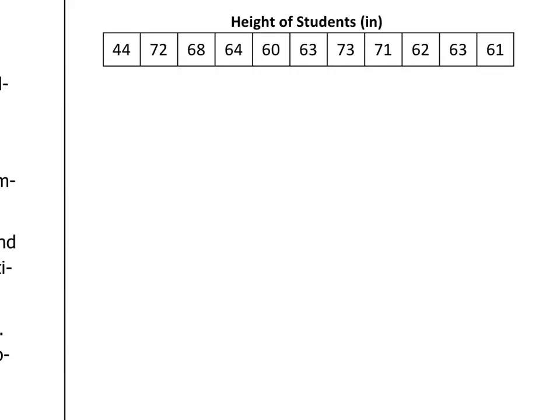The first step in making a box plot is ordering the data from least to greatest. I just want to double check that I've used all my data points. I have 11 data points and I have 11 numbers written.